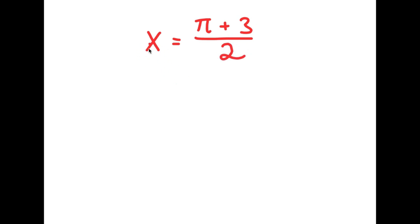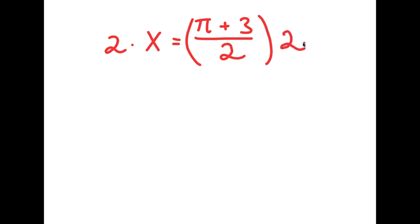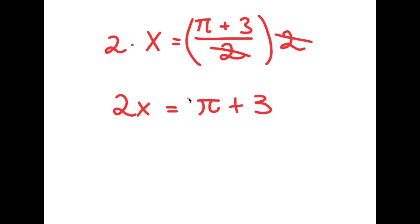All I'm doing is giving a value to a variable, which is completely legal. So now what I'm going to do is multiply both sides by 2. So I get 2 times x is equal to pi plus 3 over 2 times 2. Now, 2x is equal to — these two 2s cancel out — pi plus 3. So I get 2x is equal to pi plus 3.